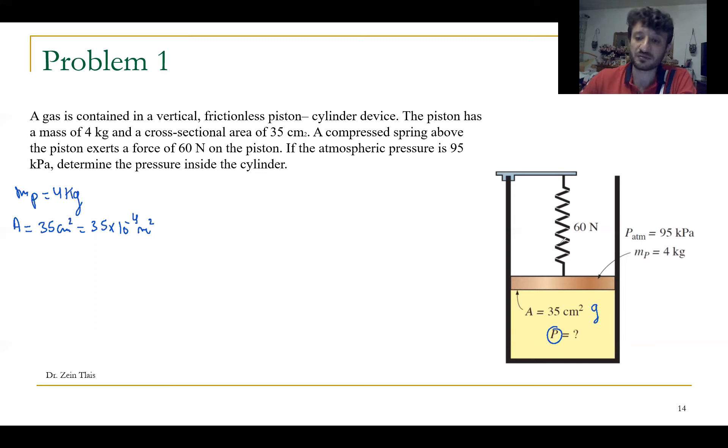So we can say here, this piston will push down, this spring will push down the piston with F_R or F_S equals to 60 Newton.